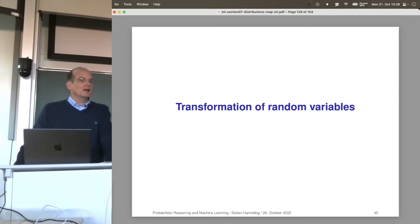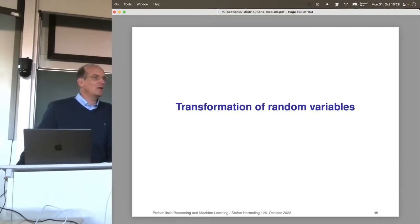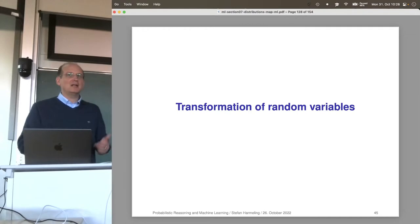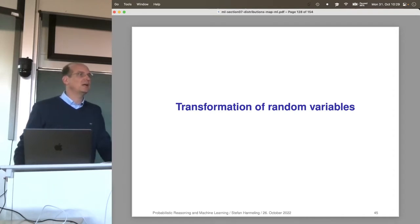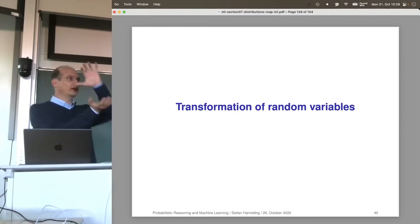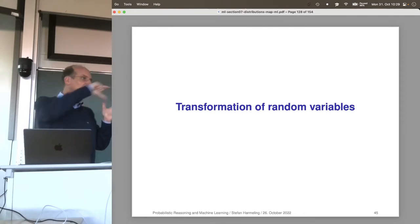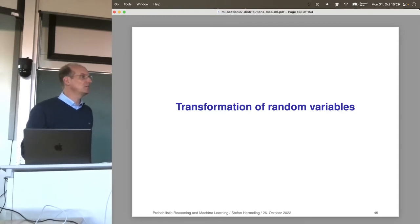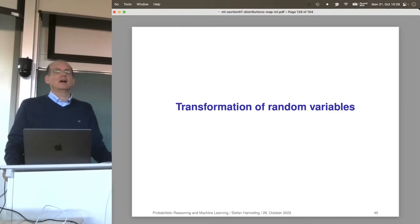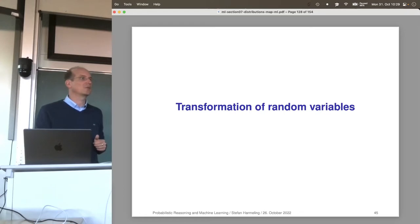There are great 3Blue1Brown videos on YouTube about linear algebra — you see the space being shifted, sheared, and flipped. If you think of a Gaussian distribution like a soccer ball — isotropic, same in any direction — and then apply a linear transformation, you can turn a soccer ball into a cigar, corresponding to changing the covariance matrix. It's still a Gaussian distribution. An affine linear mapping also shifts the whole space by a vector, which changes the mean of the Gaussian distribution.